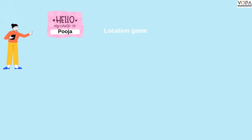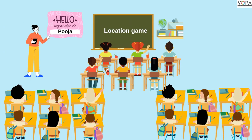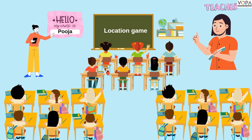Today, students, school has started and students are present in the classroom. Even the teacher has come. I forgot to introduce myself — my name is Pooja, and today our teacher is taking one game with all of us. The name of the game is Location Game.